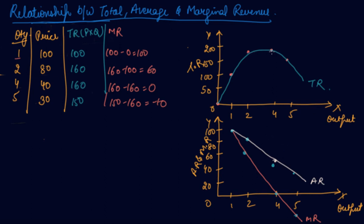So when your total revenue is maximum, your marginal revenue is 0. When your total revenue starts reducing, your marginal revenue becomes negative. When your total revenue is increasing but at a decreasing rate, your marginal revenue reduces or declines.